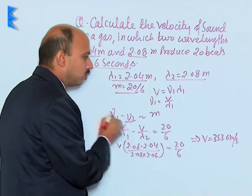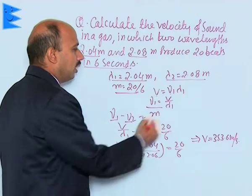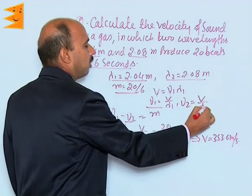So in place of nu 1 and nu 2, we have replaced these values. We can also write nu 2 is equal to V upon lambda 2.